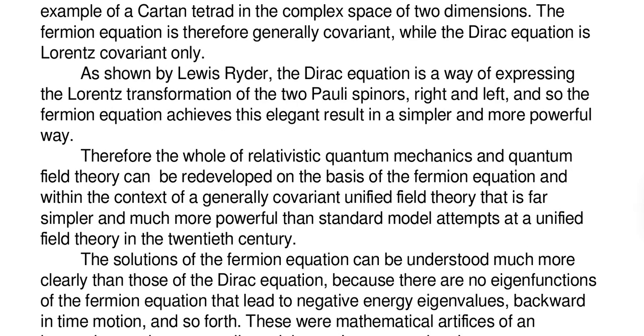As shown by Lewis Ryder, the Dirac equation is a way of expressing the Lorentz transformation of the two Pauli spinors, right and left, and so the Fermion equation achieves this elegant result in a simpler and more powerful way. Therefore, the whole of relativistic quantum mechanics and quantum field theory can be redeveloped on the basis of the Fermion equation and within the context of a generally covariant unified field theory that is far simpler and much more powerful than standard model attempts at the unified field theory in the 20th century.